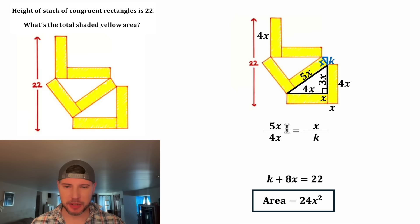Before we cross multiply, let's simplify this side. The X on top and bottom will cancel each other out. And now we can cross multiply. 5 times K will equal 4 times X. And then to solve for K, let's divide both sides by 5. And that gives us K is equal to 4X over 5.